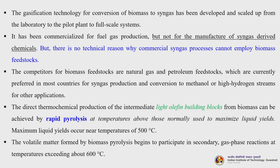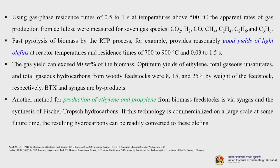Fast pyrolysis of biomass by the RTP process provides reasonably good yields of light olefins at reactor temperatures of 700 to 900°C and residence times of 0.03 to 1.5 seconds. The gas yield can exceed 98% of the biomass. Optimum yields of ethylene, total gaseous unsaturates and total gaseous hydrocarbons from woody feedstocks were 8, 15 and 25% by weight of the feedstock respectively. BTX and syngas are byproducts. Another method for production of ethylene and propylene from biomass is via syngas and the synthesis of feedstock hydrocarbons.